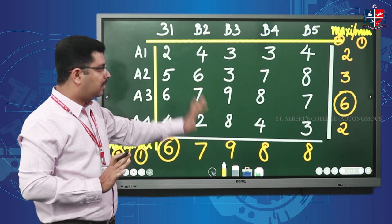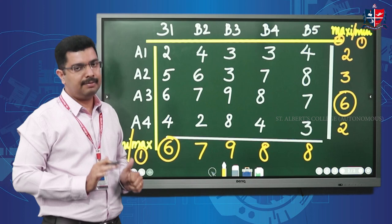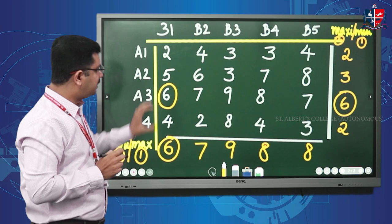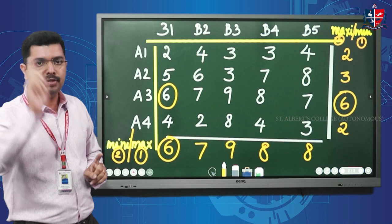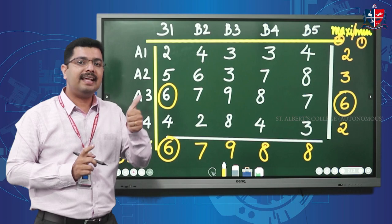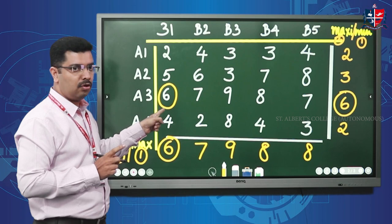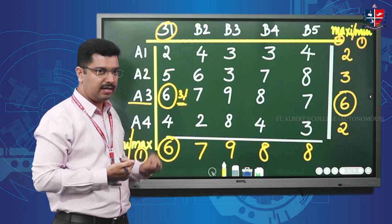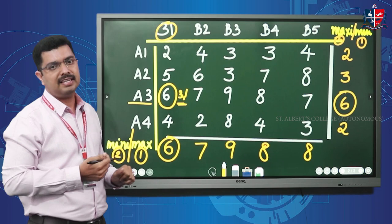We can now determine two to three things. First, the saddle point is where minimax and maximin are equal. Here both values are six — they are the same, and they confine to one particular cell. The saddle point is not a value; it is a cell reference. This cell is the third row, first column, so the saddle point is (3,1).